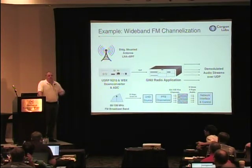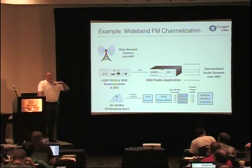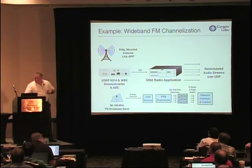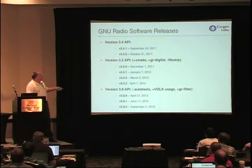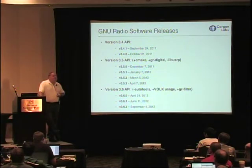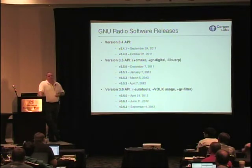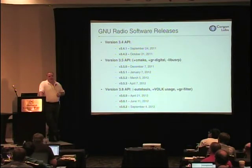We're now at a release rhythm where when the GNU Radio project cuts a release, distributions can track it. We're releasing every two to three months with a stable release, so distributions should be able to keep up and not have ancient versions. I'd like to understand the aversion to using binary packages to install GNU Radio — is it just because we love spending an hour waiting for GCC?